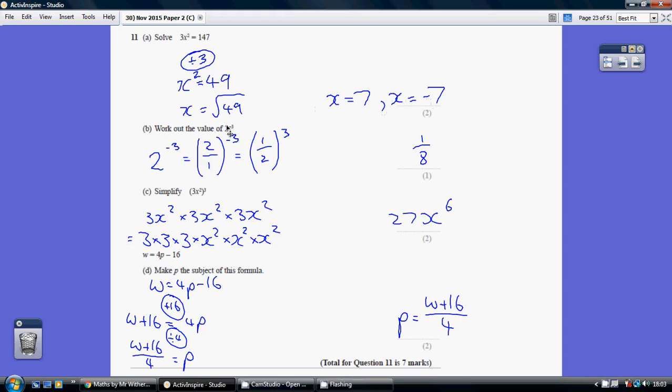Now in this negative index remember if you've got a negative you're going to have to flip it over. So we really need to turn this 2 into a fraction in order to be able to flip it over. So consider 2 as just being 2 over 1, all to the power of minus 3. We can now flip it over.